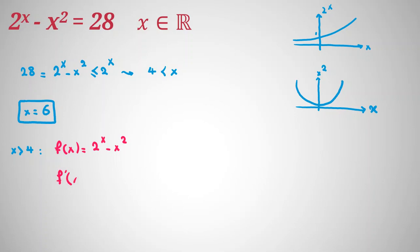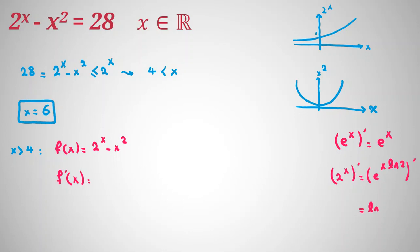For finding whether f of x is increasing or decreasing, we should calculate f prime of x. To differentiate 2 to the x, we write it as e to the power of x times ln 2, whose derivative is ln 2 times e to the x ln 2, which equals 2 to the x. So f prime of x equals 2 to the x times ln 2, minus the derivative of x squared, which is 2x.